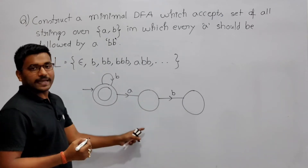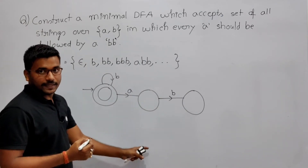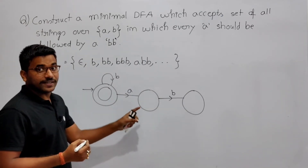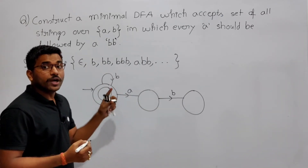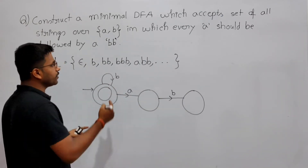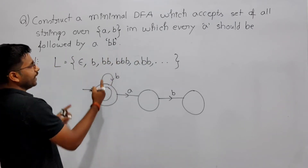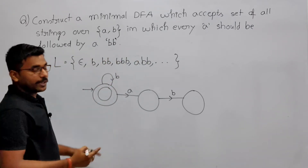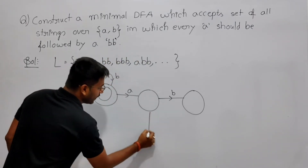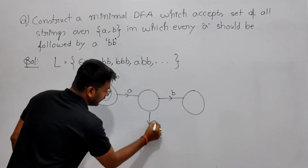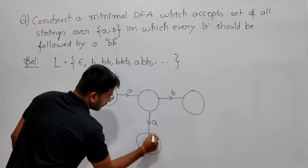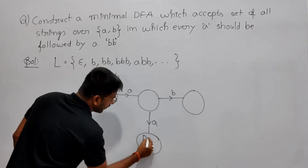Now after A, if it is again getting A, then you have to reject it — it should go into a dead state. Because after every A it should be followed by BB. So after A, if you are getting another A, reject it — it goes into the dead state.